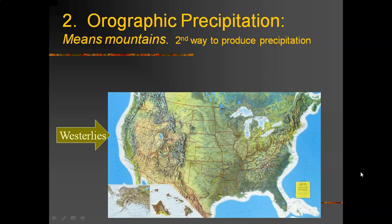In lecture three, we're continuing the precipitation process and focusing on the second way to produce precipitation: orographic means. It's called orographic precipitation. The term orographic is Latin meaning mountains, so anything occurring in mountains you might see the term orographic.